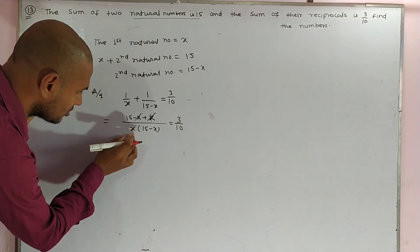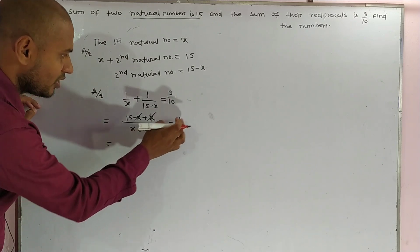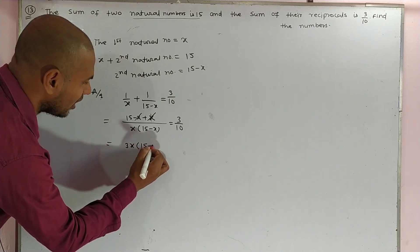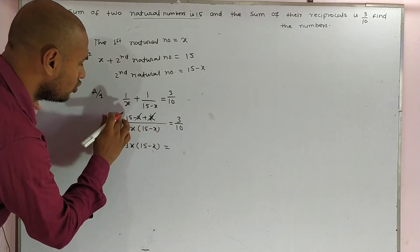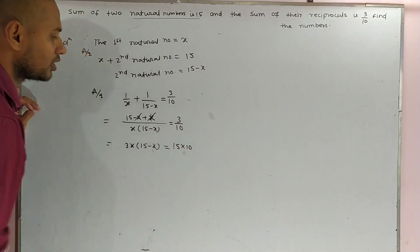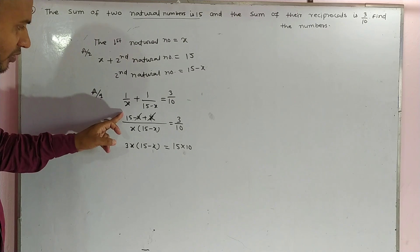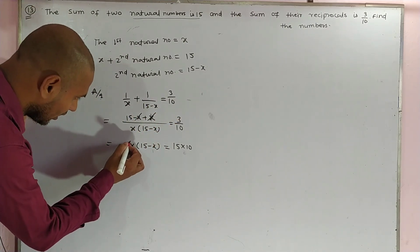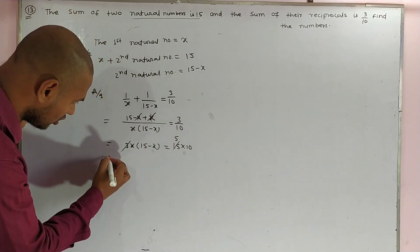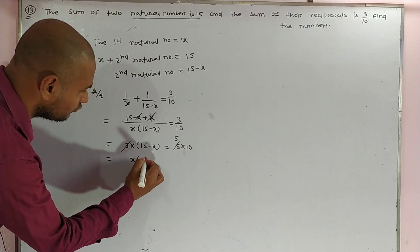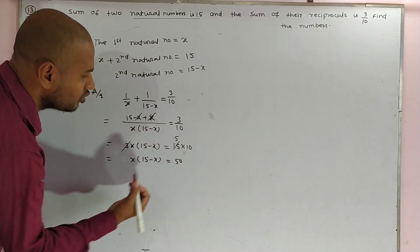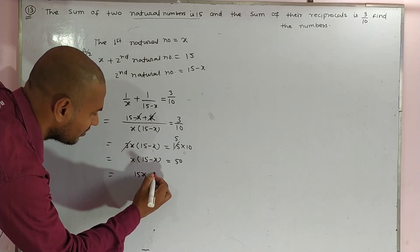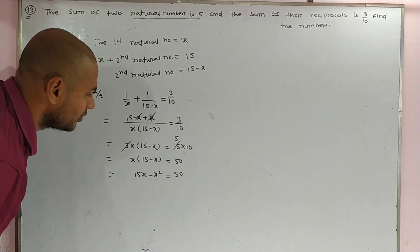Cross-multiplying: 15 multiplied by 10 equals 3 multiplied by x(15 minus x). You can cancel the 3 and 15 — 15 divided by 3 gives 5 — so x(15 minus x) equals 50. Expanding: 15x minus x² equals 50.